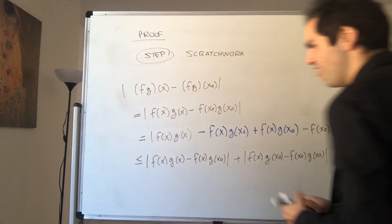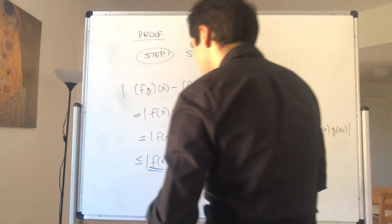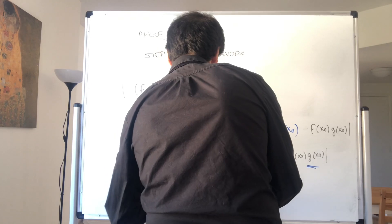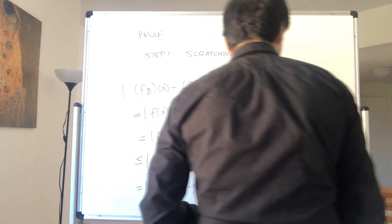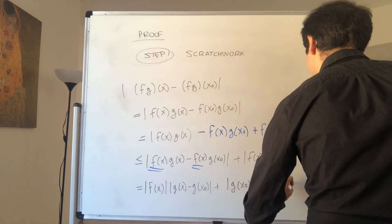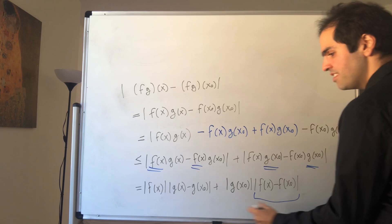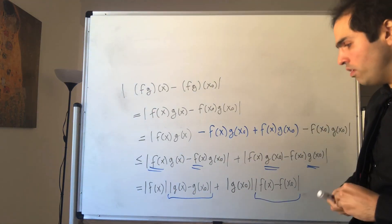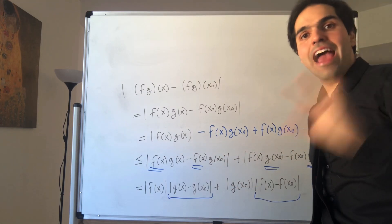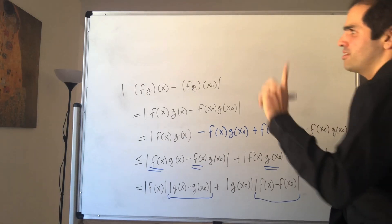Now the nice thing is: here f(x) factors out, and here g(x₀) factors out. So this becomes |f(x)|·|g(x) - g(x₀)| + |g(x₀)|·|f(x) - f(x₀)|. This is a good sign because f is continuous so we can make |g(x) - g(x₀)| small, and g is continuous so we can make |f(x) - f(x₀)| small. The only issue is |f(x)| depends on x, but that's not a big deal because we can assume x is close enough to x₀, so this is roughly equal to f(x₀).